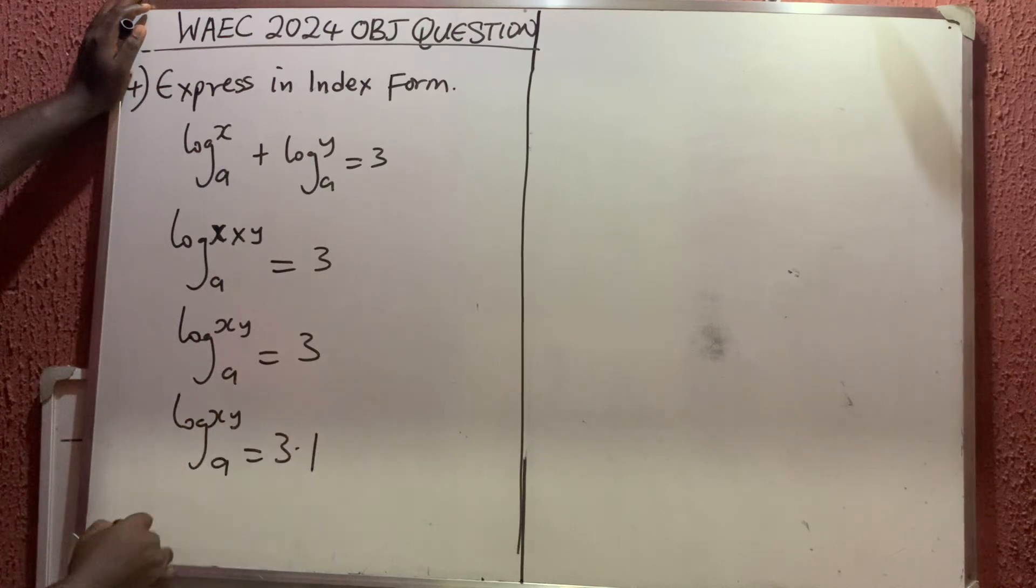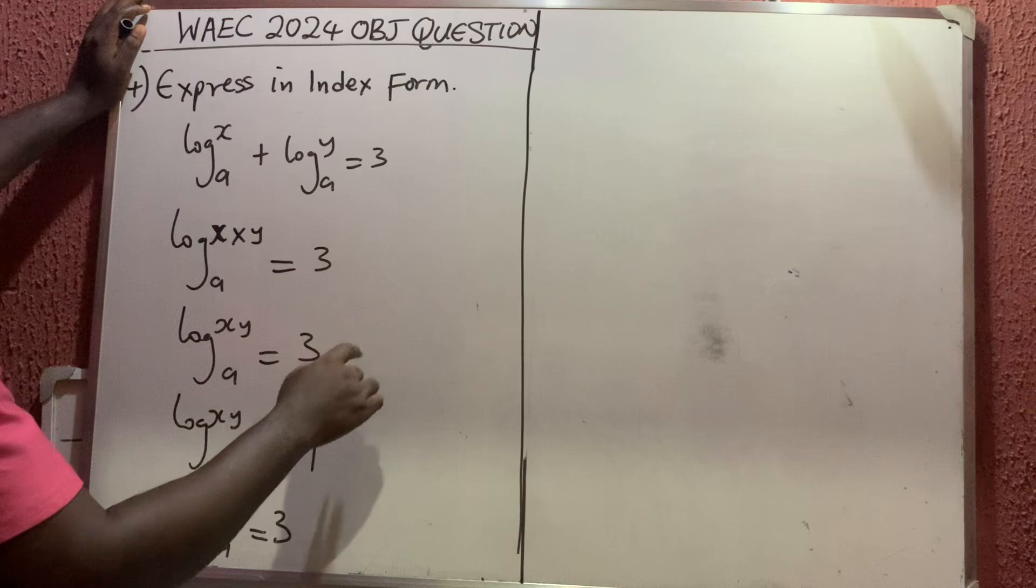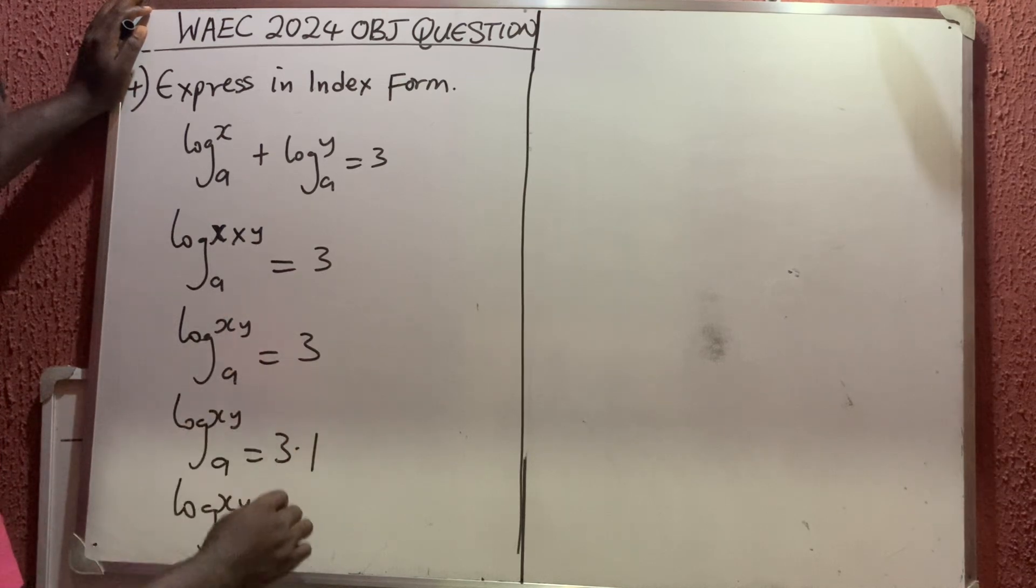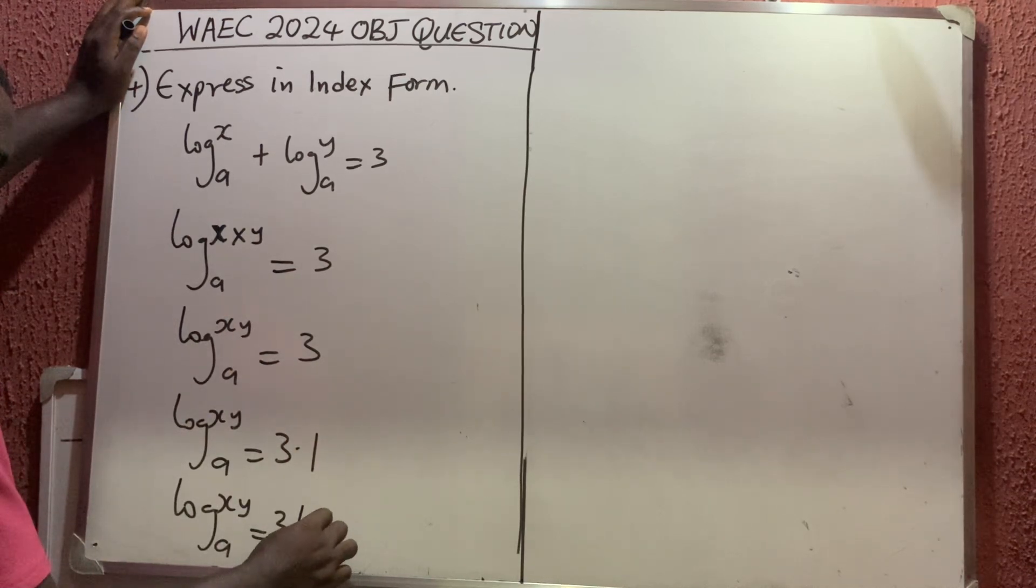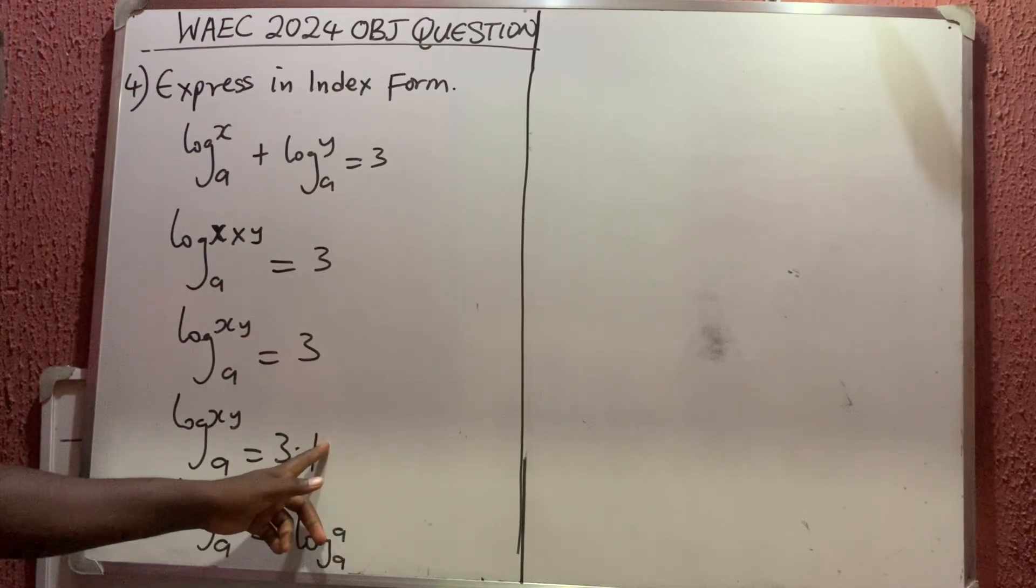When the log and the base are the same thing, the answer is 1. So I can take it as 3 log a base a. If the log and the base are the same thing, the answer is 1.